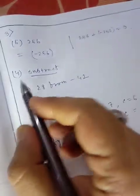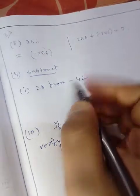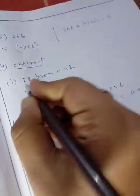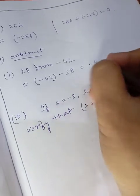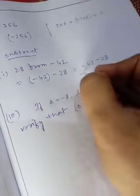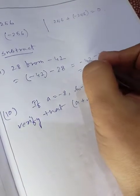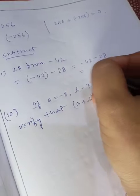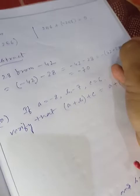Now subtraction for the next question. First, 8 plus 2 is 0, remains 1. 4 plus 2 is 6 and 70. Or you can write it like this also.